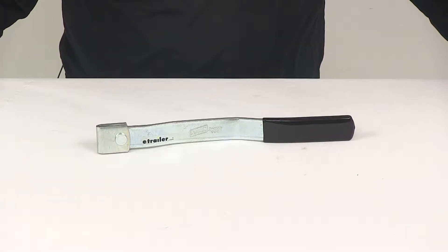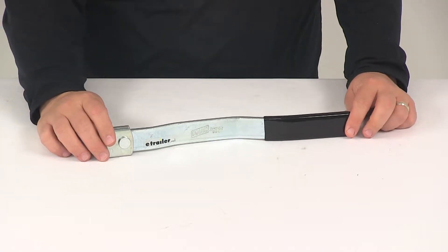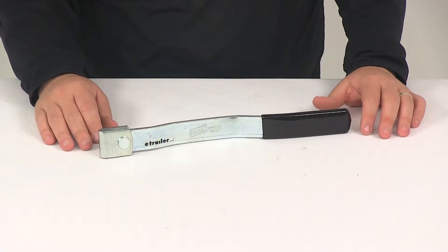Today we're going to be taking a look at the replacement handle for a cam door lock from Polar Hardware. This handle replaces an old or damaged handle on your cam door lock for your trailer.